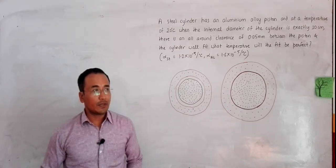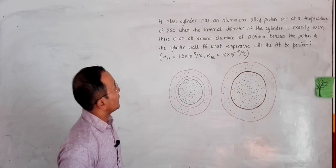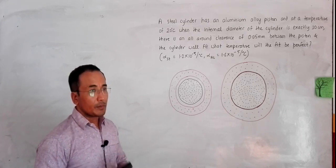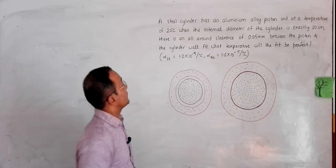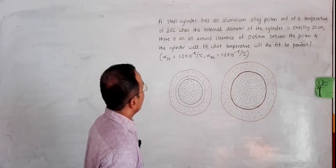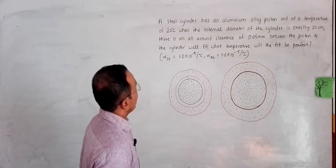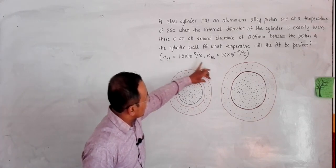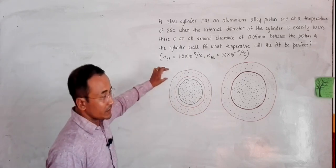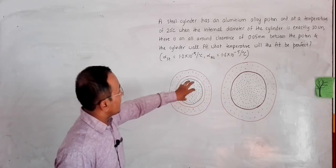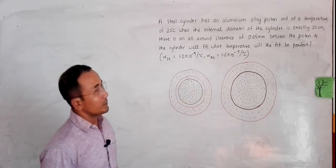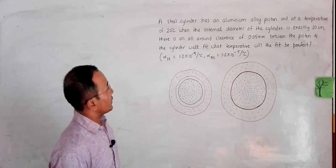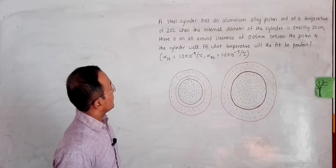Today we have a problem related to thermal physics — specifically thermal expansion. We have a steel cylinder with an aluminum alloy piston. The red-colored element represents the steel cylinder and the black-colored element is the aluminum alloy piston.